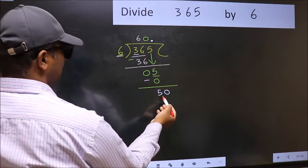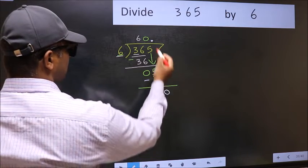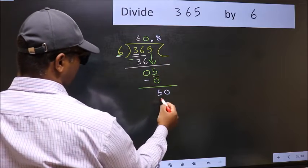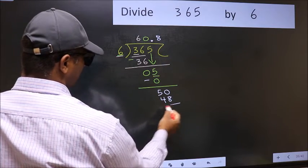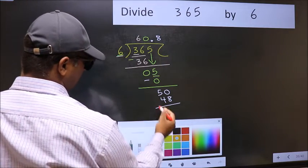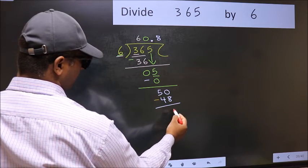So 50. A number close to 50 in 6 table is 6 times 8, which is 48. Now you should subtract. 50 minus 48 is 2.